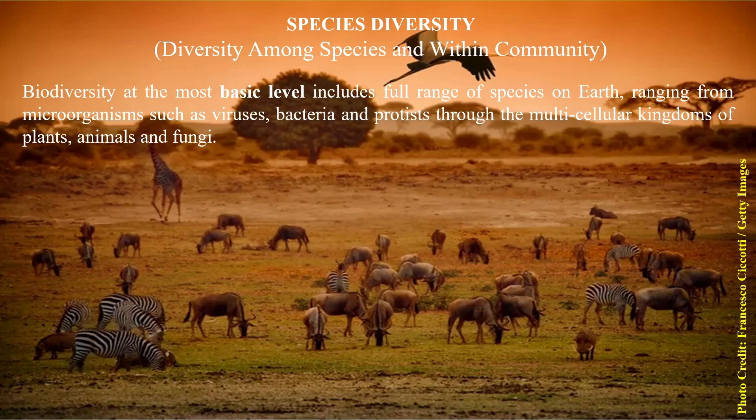At the most basic level, species diversity includes the full range of species on earth, ranging from microorganisms such as viruses, bacteria, and proteins, through to the multi-cellular kingdoms of plants, animals, and fungi.